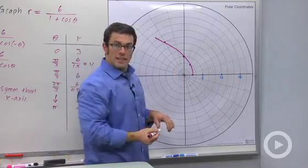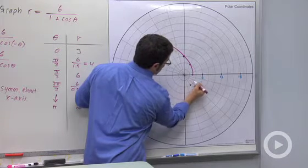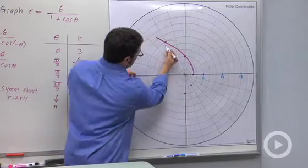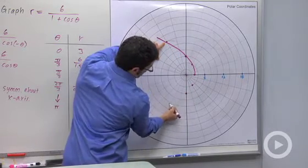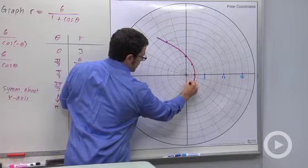And remember, it's symmetric across the x-axis, so I can reflect these points down. This one goes to here. And this point goes here. And so, just continuing it around.